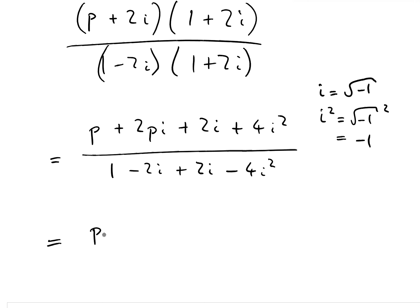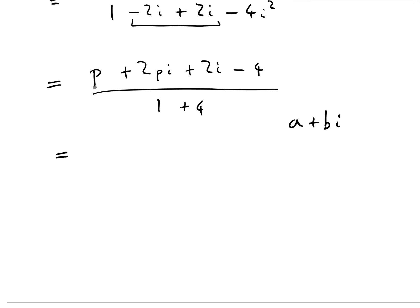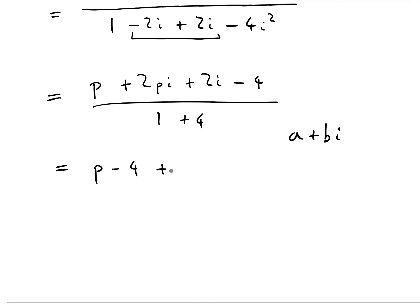Now we can use i squared equals minus 1 to simplify. The top becomes p plus 2pi plus 2i, and the 4i squared reduces to minus 4. On the bottom, the minus 2i and plus 2i cancel, and the minus 4i squared becomes plus 4 — giving us 5 on the bottom. So we've got p minus 4 as the real part on top, added to 2pi plus 2i, from which we can factor out i to clearly see 2p plus 2.